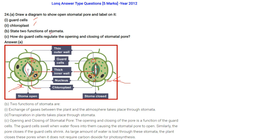State two functions of stomata: exchange of gases between the plant and the atmosphere, and transpiration in plants. How do guard cells regulate the opening and closing of stomatal pores? Guard cells swell when water flows into them, causing the stomatal pore to open. When water moves out, the guard cells shrink and the pore closes. The plant closes the pores when it does not require CO2 for photosynthesis, to prevent large amounts of water loss.